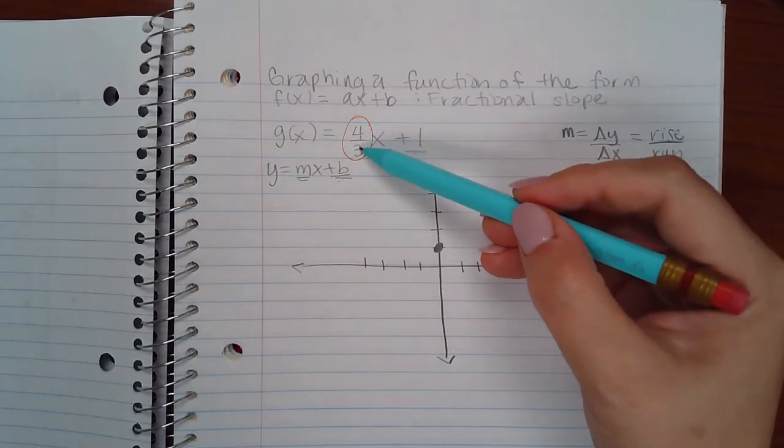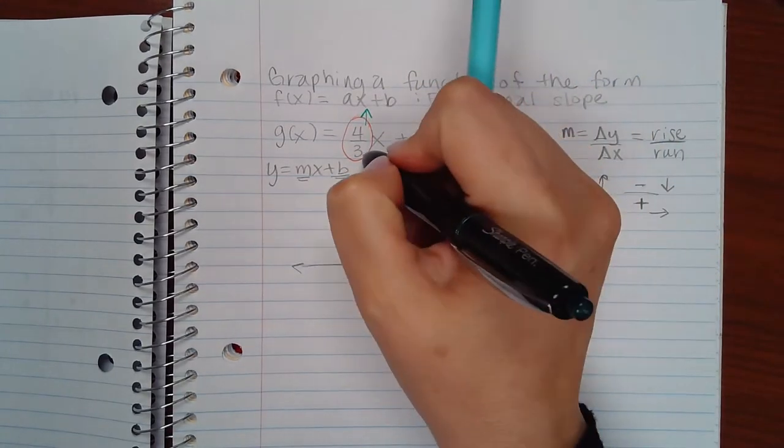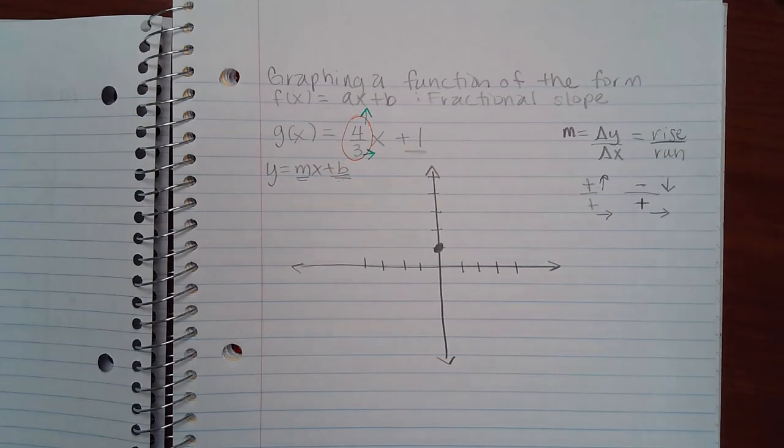So since it's 4 over 3, that means I'm going to go up, because it's positive, and to the right, always.